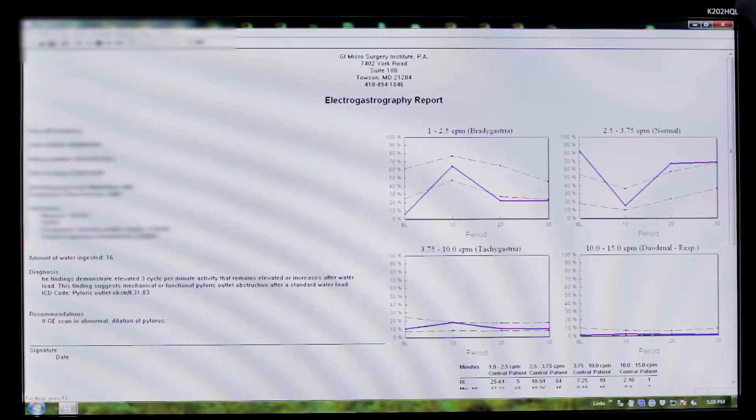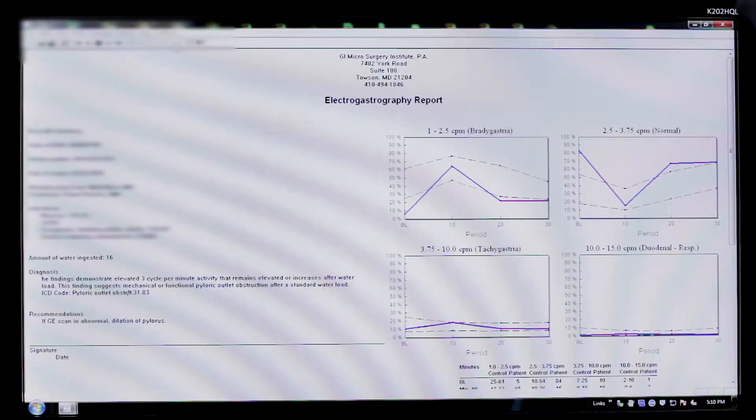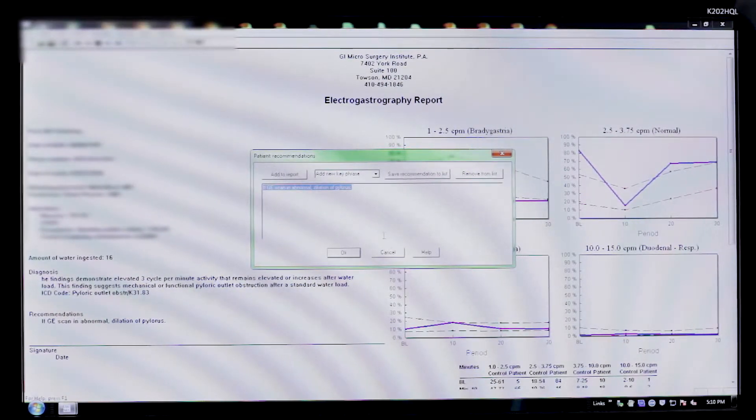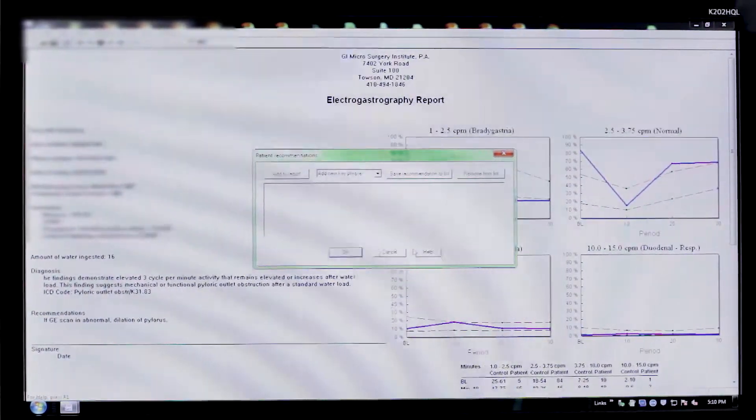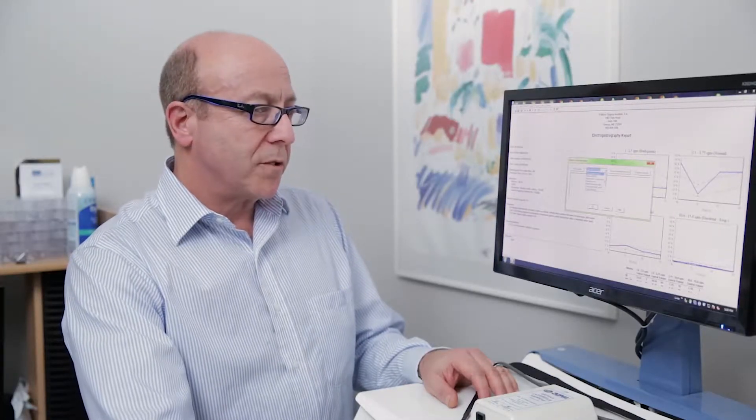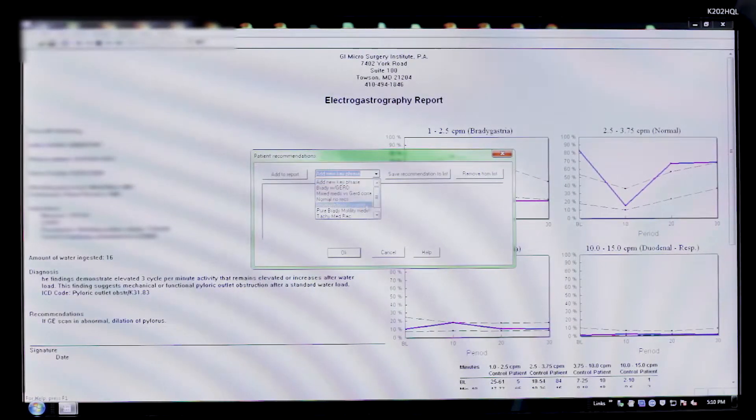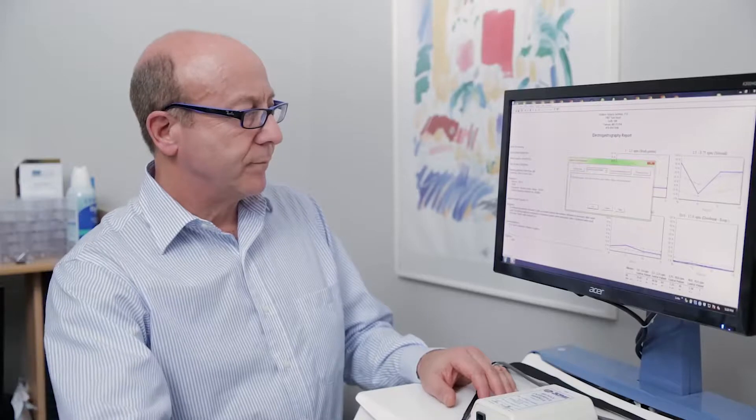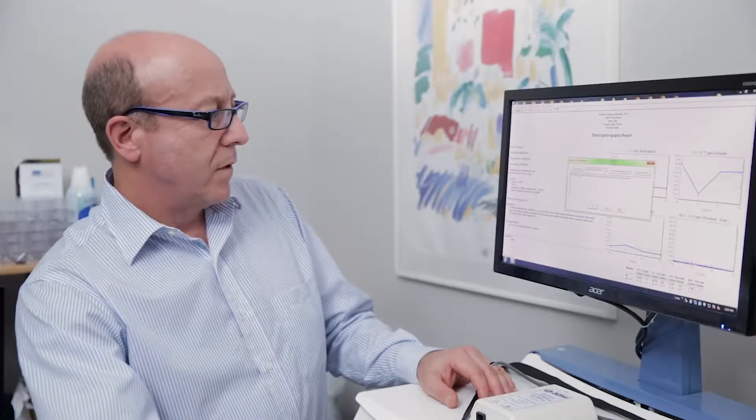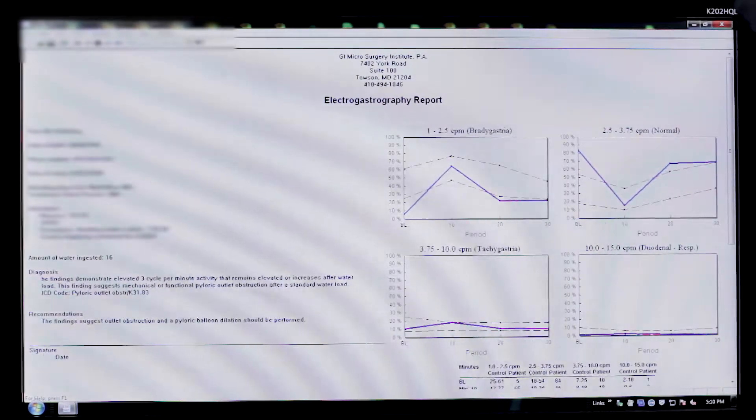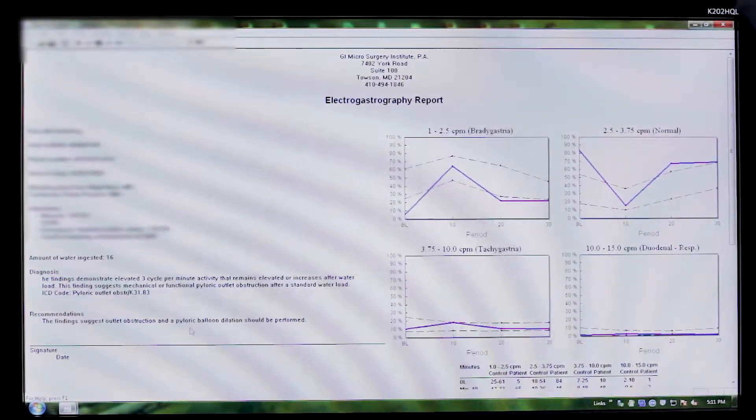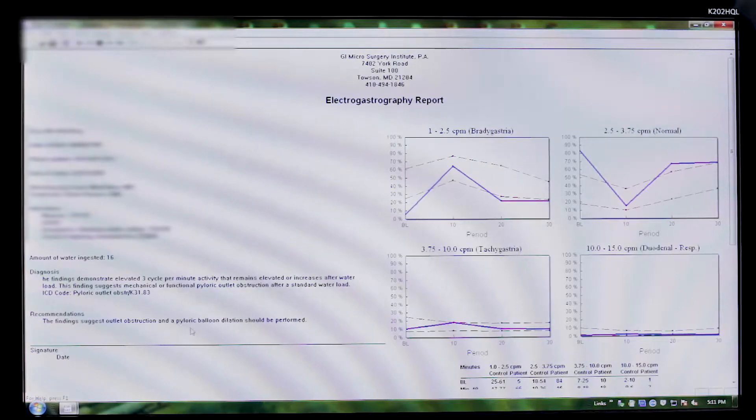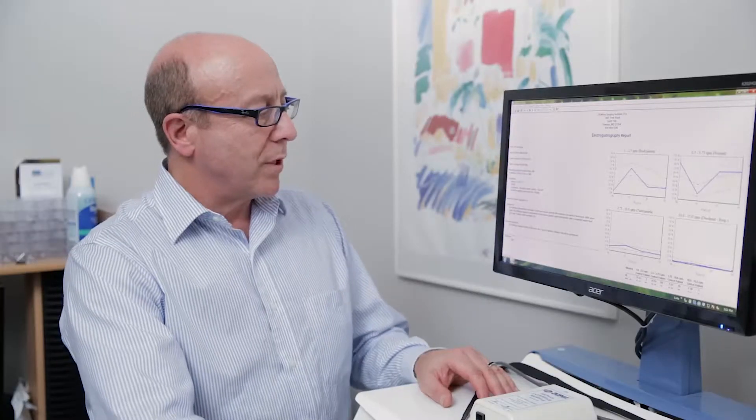If we go back, we're going to complete the report by putting in our recommendations. I already have placed in my own recommendations. This is configurable to the user. I will pick Outlet Obstruction Dilate, add this to the report, and click OK. You'll see it now appears in the report. At this point, the report is complete. And you're able to save it. If at any time the report is incomplete, it will not allow you to save the report until you complete the report.